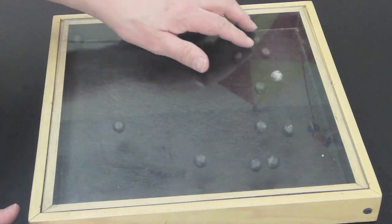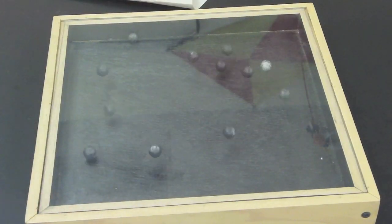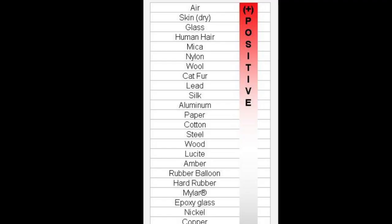So what's causing them to move? When I rub the lid, I'm actually creating a static charge. When I look at the triboelectric series, I see that my hand or fur actually becomes positively charged by giving up electrons.